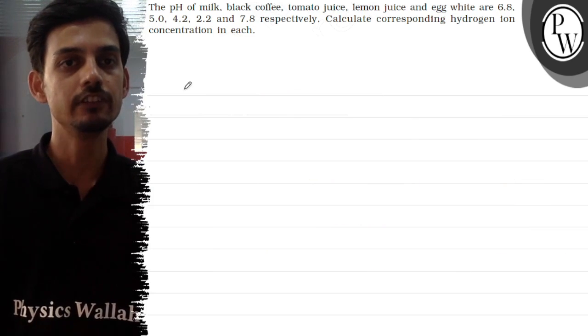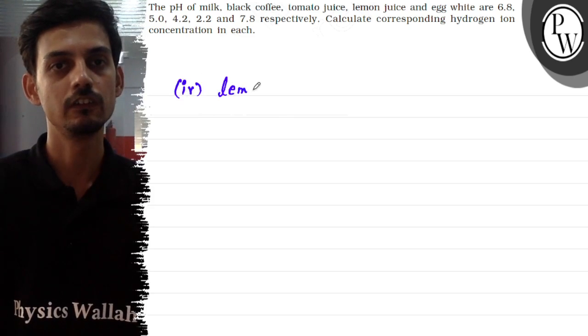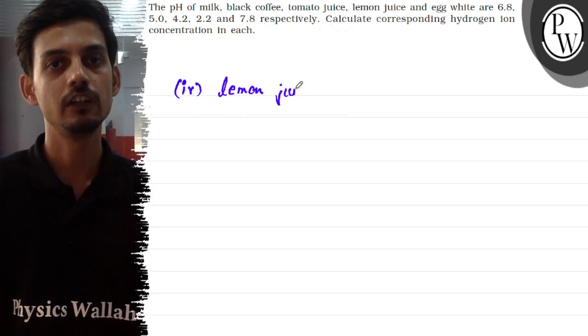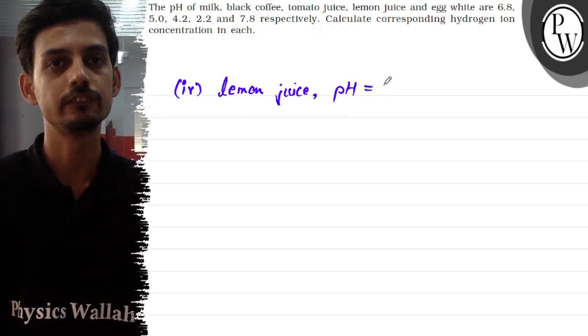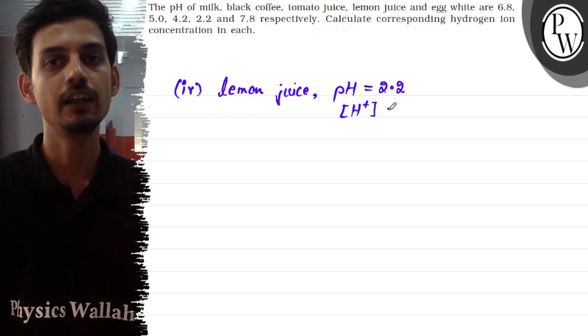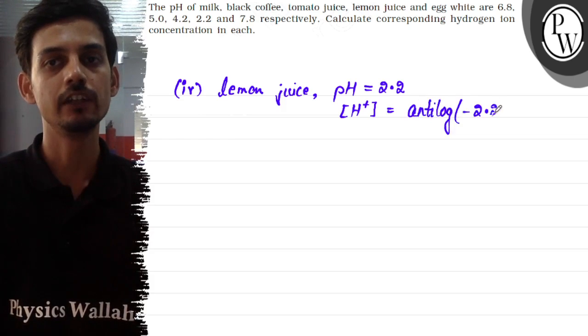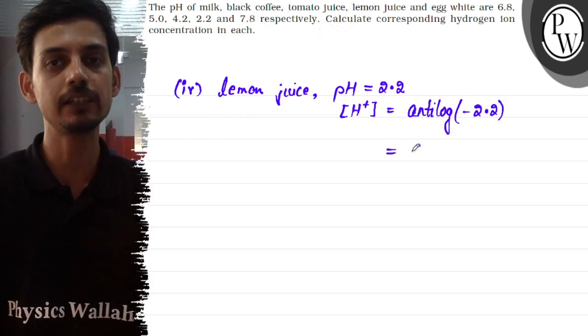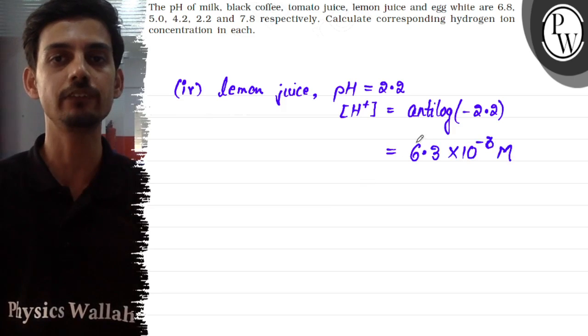In the fourth part, we have lemon juice, and the pH is given as 2.2. So the concentration of H+ ion in lemon juice will be antilog of minus 2.2, and this will come out to be approximately 6.3 × 10^(-3) moles per liter. The antilog value of minus 2.2.